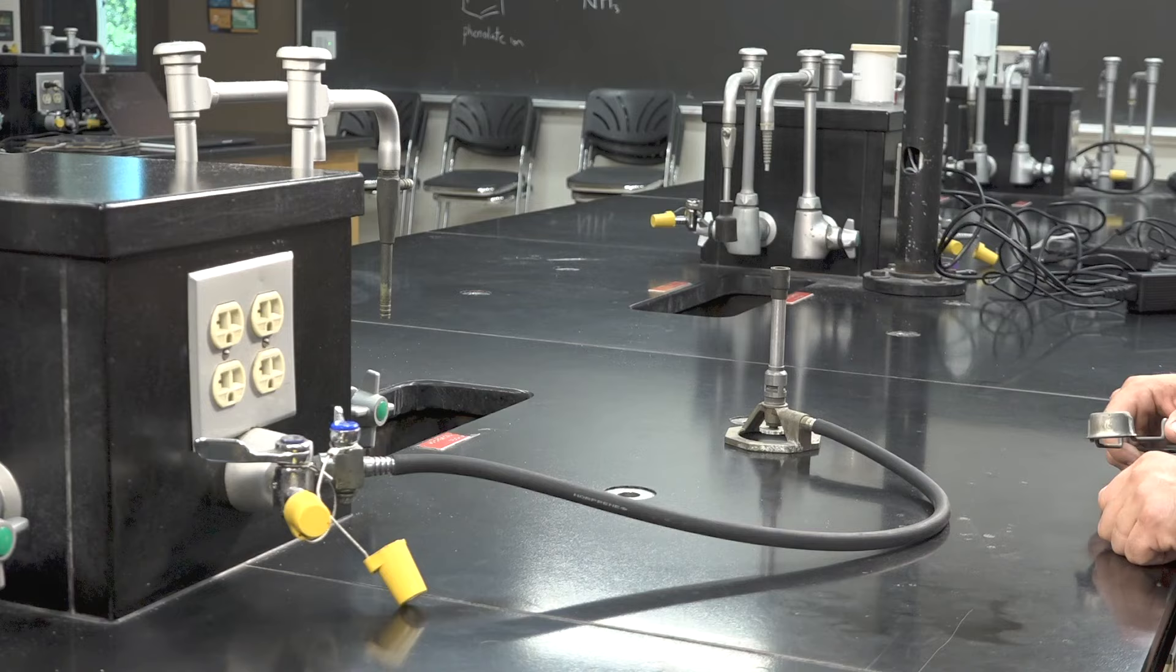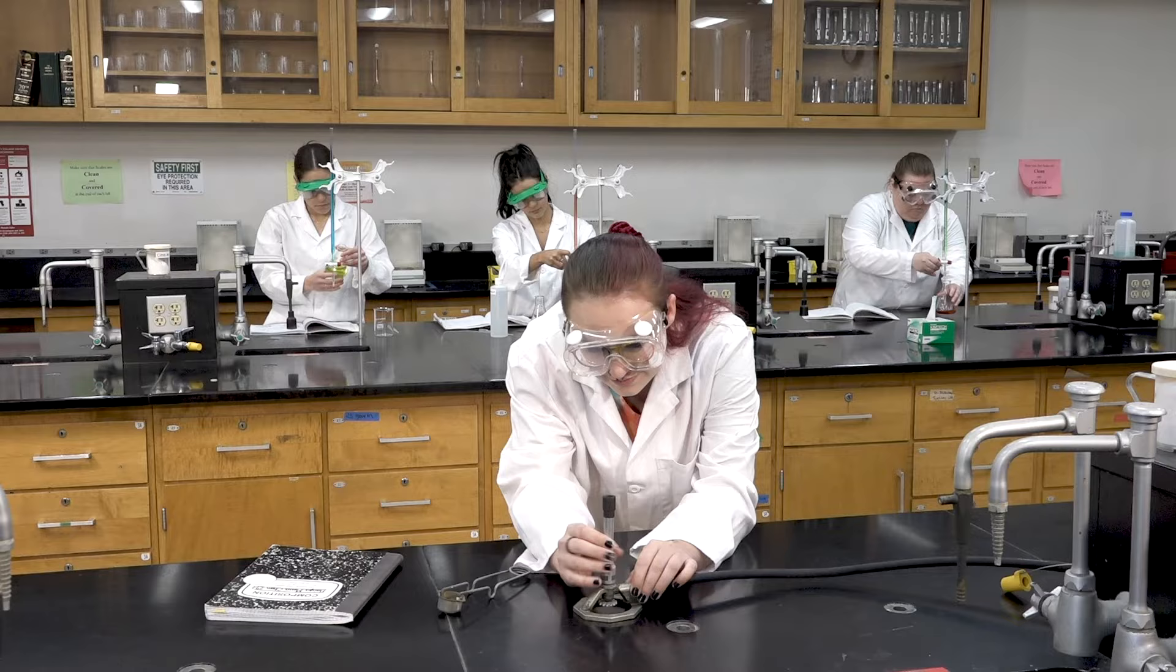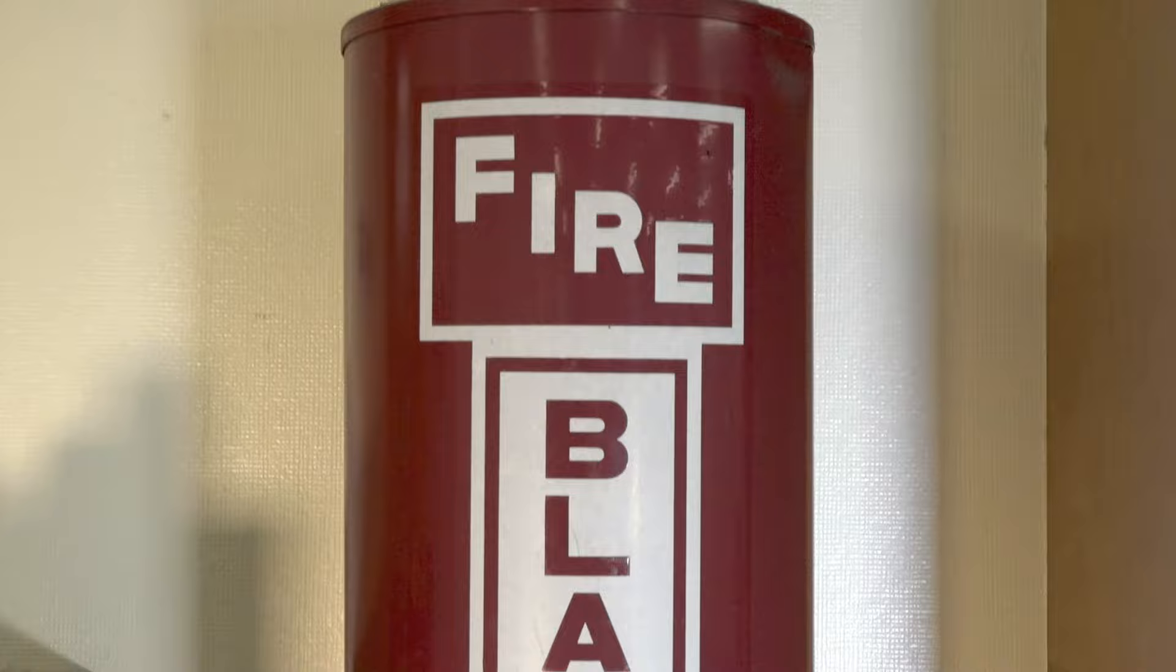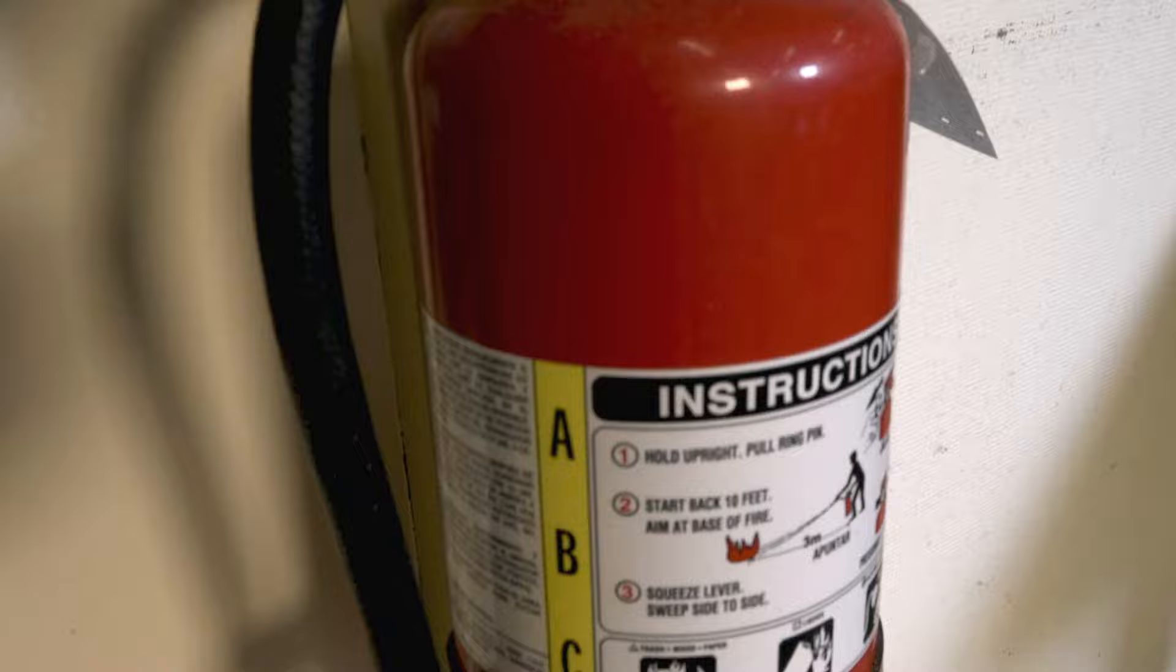Chemists often use open flames from sources such as a Bunsen burner. Because of this, there is a risk of fire. In the event of a fire, taking action can prevent injury, so make note of the fire-suppressive equipment around the lab. There is a fire blanket made out of sturdy fire-resistant material. For larger fires, there is a fire extinguisher located in every lab.